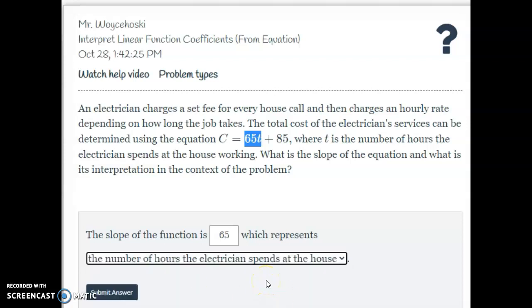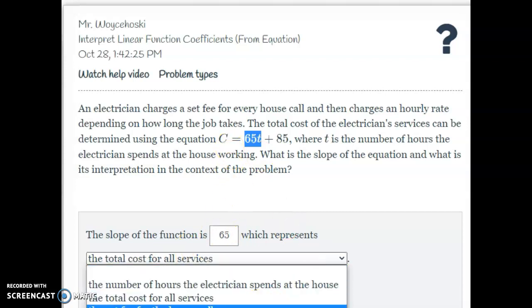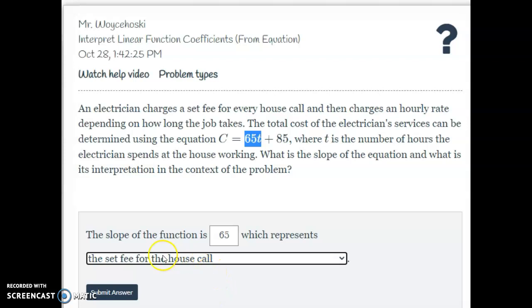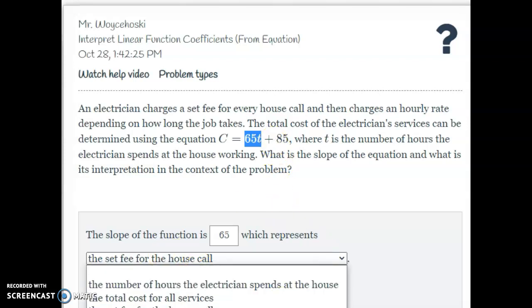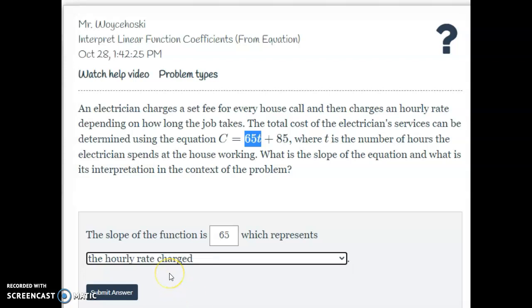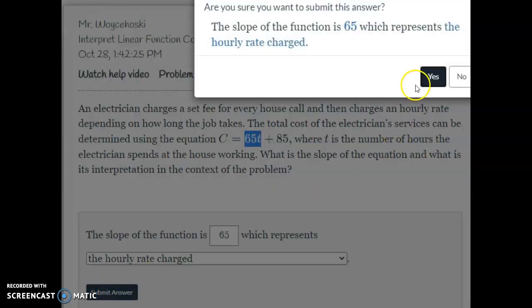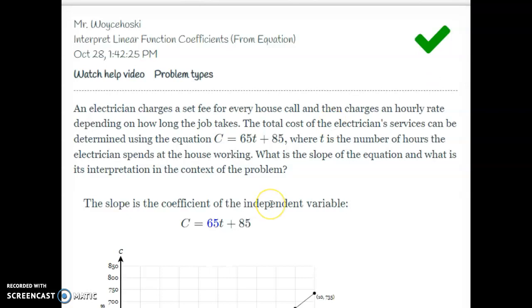Then our goal is just to pick which one that is. So I got the number of hours, no, T is the number of hours. I got the total cost, that's C. And then I got the set fee for the house call, that would be the $85. And then my last option is the hourly rate charge. So that's the only one that talks about a rate or something per something. That's how much he's charging. Once you go through a couple of these, hopefully you get the idea of it.